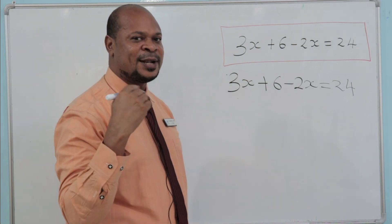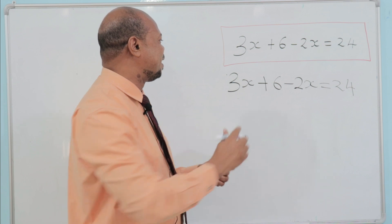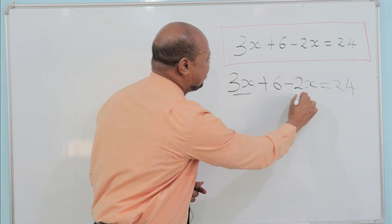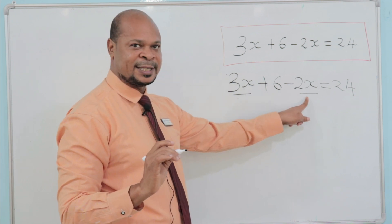We are going to put the like terms together. Like terms are the terms which are the same. In this case, we have 3x and 2x.